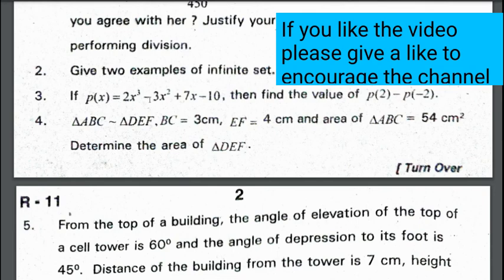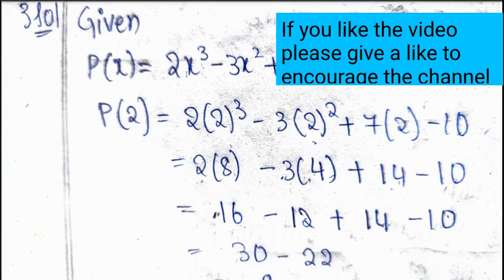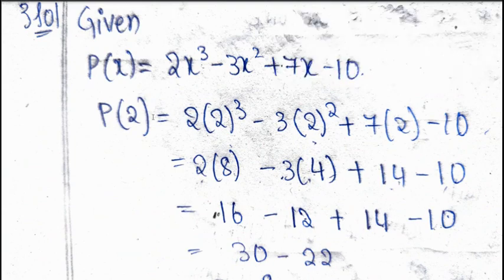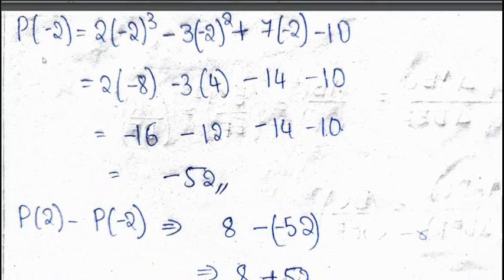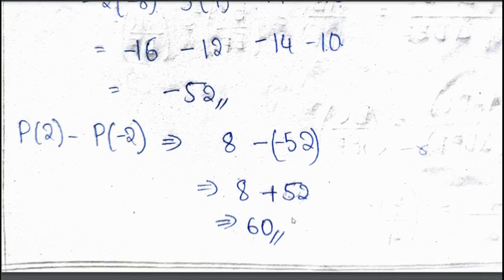Third question. If P(x) is equal to 2x³ - 3x² + 7x - 10, then find the value of P(2) - P(-2). Before finding this value students, we have to find the value of P(2) and P(-2) and we have to subtract both the answers. P(x) given as 2x³ - 3x² + 7x - 10. So, P(2) replace the value of 2, we get the answer as 8. We have to replace P(-2) also. By calculation, we will get the answer as -52. So, P(2) - P(-2) is 8 - (-52) is 8 + 52 which is 60.